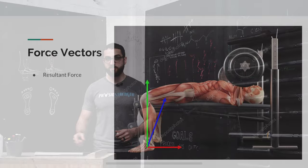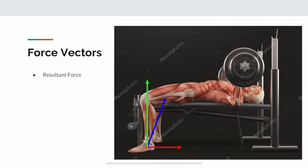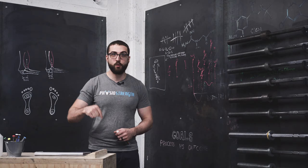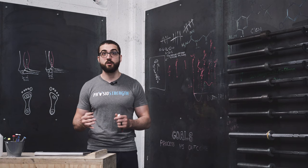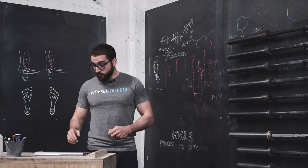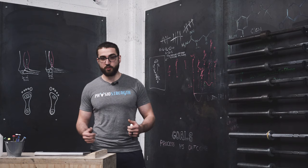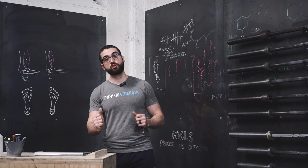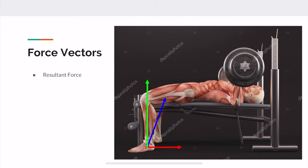In the bench press, leg drive is a great example of resultant force. Always think of leg drive as a resultant force — you're going to have a y component because you're pressing down with your feet, and you'll never have zero y component because your feet would slide off the ground. There's also an x component, which we care about more, related to friction between your feet and the ground and how hard you push your butt toward your head to create that tight arch. We want that resultant force to be directed to maximize arch tightness, pressing our body the right way.